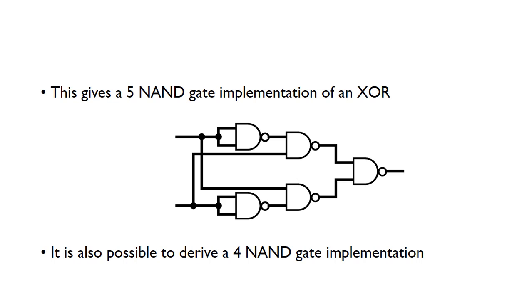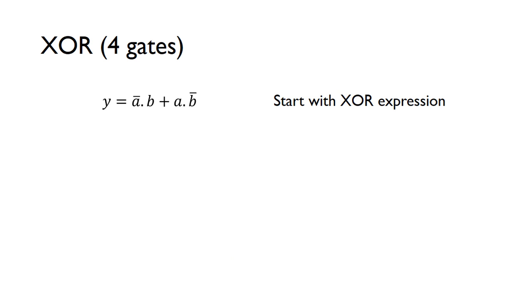It's actually possible as well to get a four NAND gate implementation. This is a bit harder. We need to apply some of the rules that we've learned before. Starting from the normal XOR SOP expression, we can just OR in some extra term using the zero and unit sum rules. You can see this A and NOT A, we know that's going to be zero. ORing in zeros doesn't change this expression.